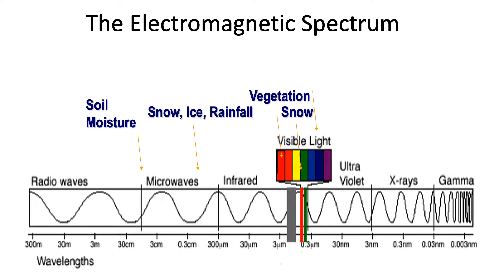Traditionally we use radiation-based remote sensing technologies to sense different components of the Earth system. Highlighted on this cartoon of the electromagnetic spectrum we have soil moisture, snow, ice, rainfall, and vegetation. The region identified as microwaves is the region of the electromagnetic spectrum that is sensitive to soil moisture, and in the next figure I'll show you how that is done.